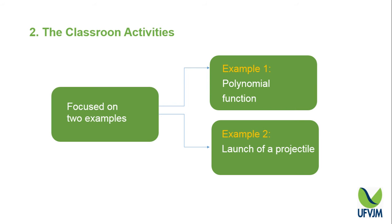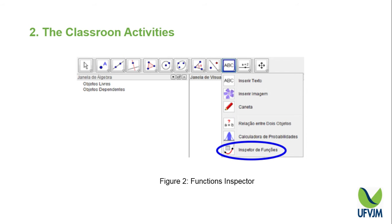We had many examples and we are going to show only two. The first example shows the behavior of a fourth-degree polynomial function along the domain, exploring maximum and minimum points. The second example presents the launching of a projectile in three different situations. The activity presented in Figure 1 was proposed with the goal of showing students the importance of finding maximum and minimum points of the polynomial function, using the Function Inspector tool and the Extreme Value Theorem.